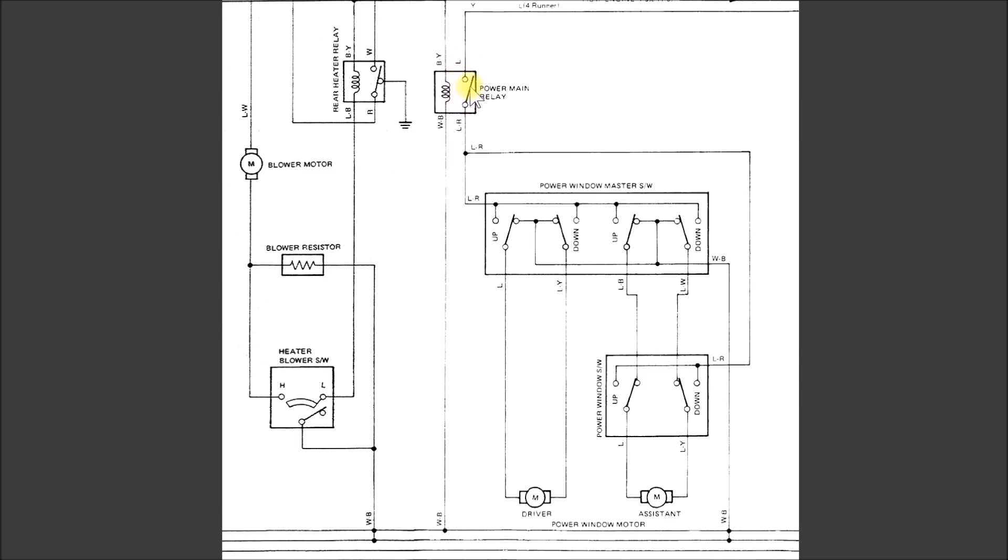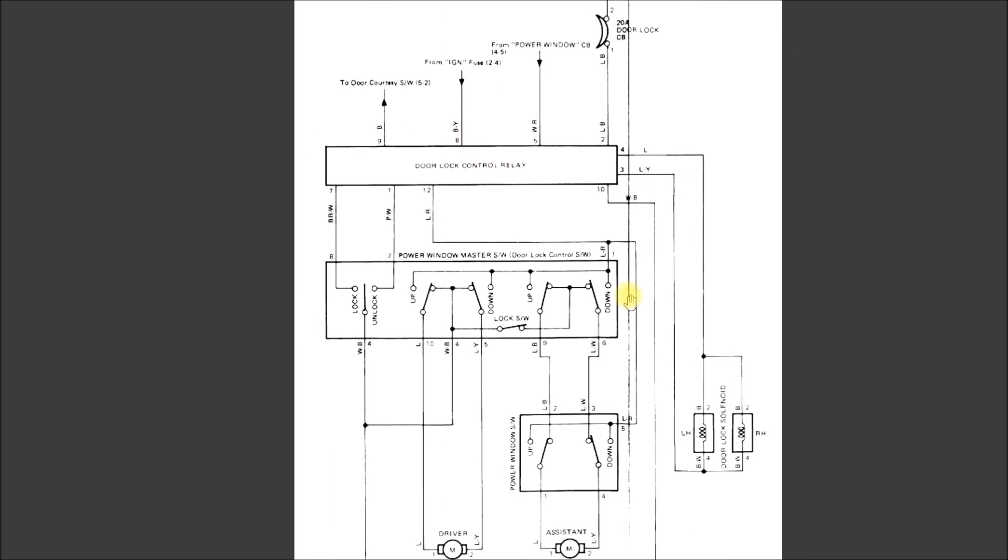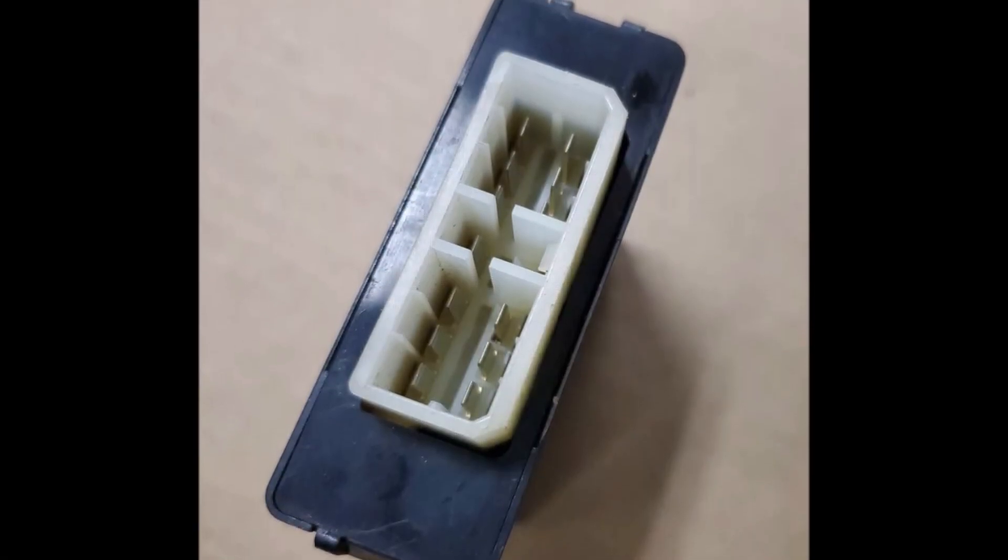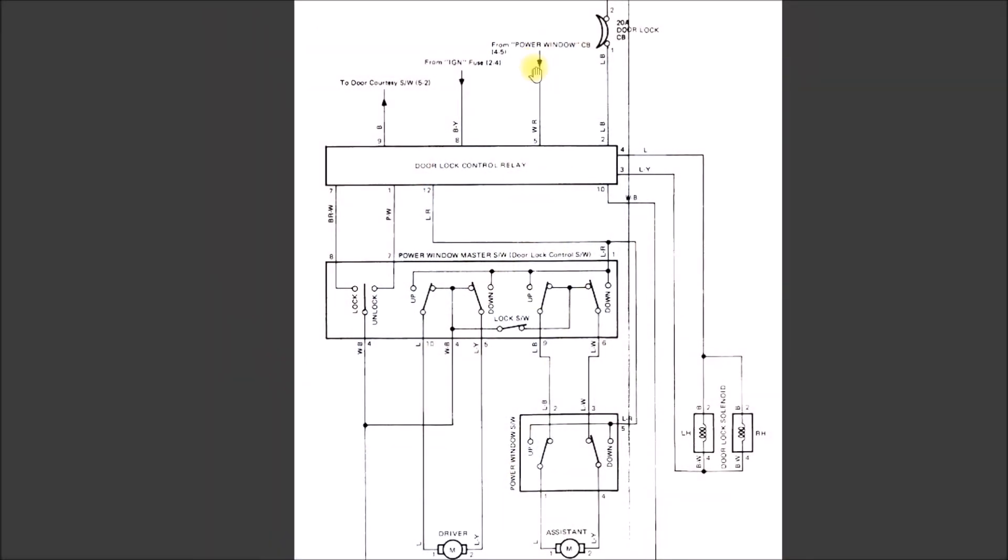This is the window relay in an '88 4Runner. I don't know exactly what year they changed, but you can see here they now have more stuff. This isn't just a relay anymore - they call it the door lock control relay. Here's the power coming in from your circuit breaker and there's a bunch of outputs coming out. They don't show you what's inside, they don't give you the circuitry inside this door lock control relay.